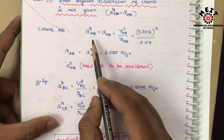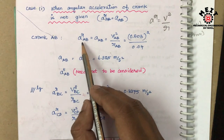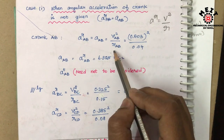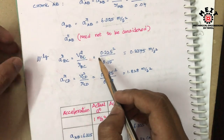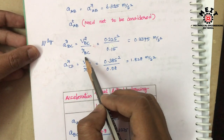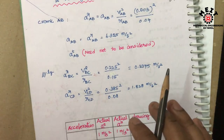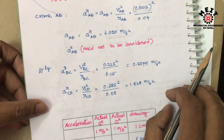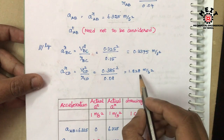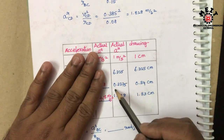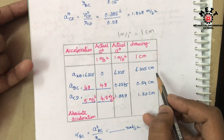AR value is equal to V² / R, where R is the link length. So for AB, radial component of AB = velocity of AB squared divided by length of AB. That will be 6.32 m/s². Then for BC: AR of BC = V_BC² / R_BC. And CD radial acceleration similarly. So initially consider the radial acceleration in each link. The values are: AB = 6.325, BC = 0.3375, CD = 1.825. The scale is 1 cm = 6.325, meaning AR of AB = 6.325 cm.